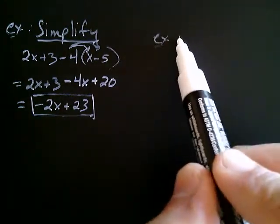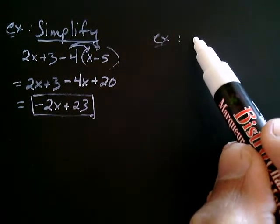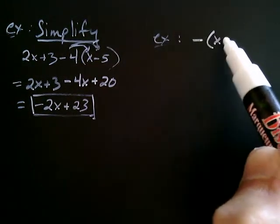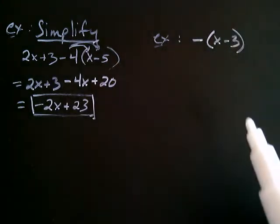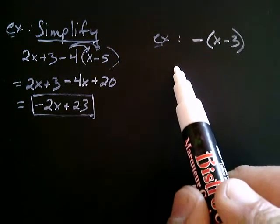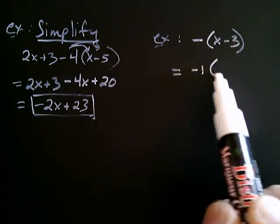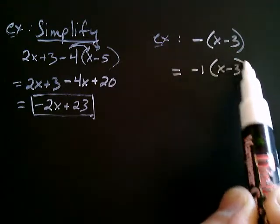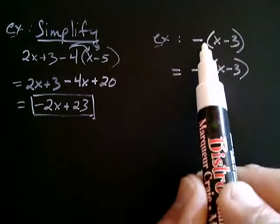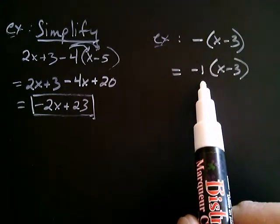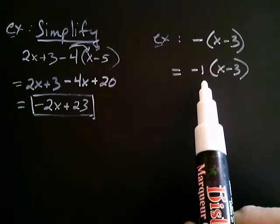So, let's notice that if you have negative x minus 3, okay? This is the same thing as negative 1 multiplied by x minus 3. Now, we typically don't write the negative 1 there, but this is a useful way of thinking about it.